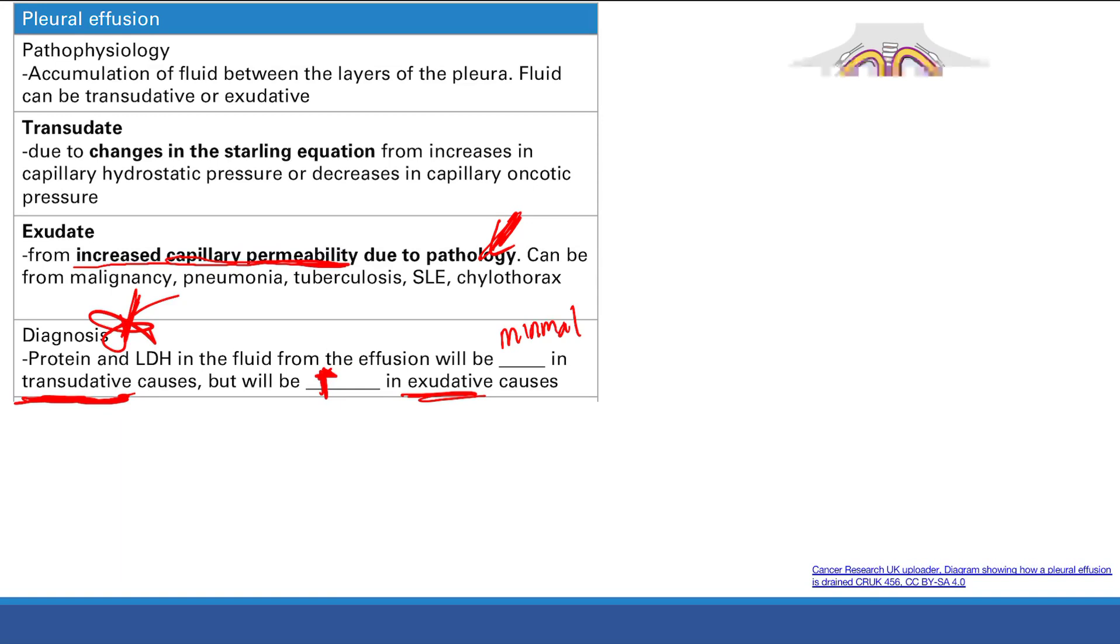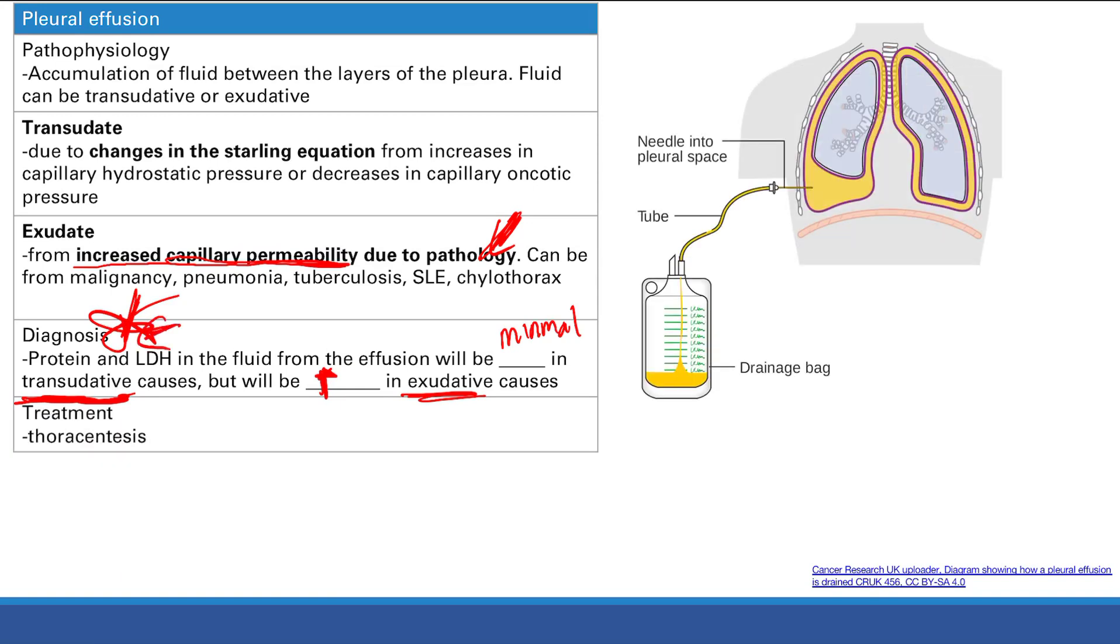So that's it for pleural effusion. Just pretty easy. Just remember the difference between transudate and exudate, the basic underlying reason, and then understand this diagnosis, this protein and LDH thing, and you'll be good to go. Okay.